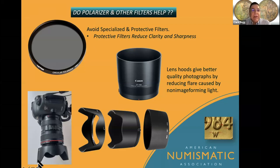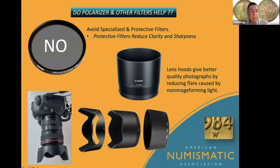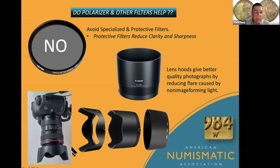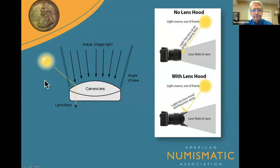A lot of people ask if polarizers work — no, they really don't work in numismatic photography. What does help are lens hoods. When your camera is set up on a copy stand, the lens hood aids image quality by reducing flare caused by non-image-forming light. Light leakage will skim the lens and give you flare. The lens hood prevents this so you're just getting the light from the actual image.